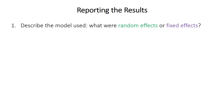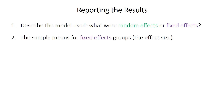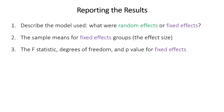When reporting the results of a nested ANOVA, it's important to describe the structure of the model — what were the random effects, what were the fixed effects, and the overall model structure. You should report the sample means for any fixed effect main groups, since the difference between means tells you how big the effect was. You should also report the F-statistic, its two degrees of freedom — degree of freedom one for between groups and degree of freedom two for between subgroups — and the p-value for the fixed effects, which helps you decide how likely it is that there's a real effect.